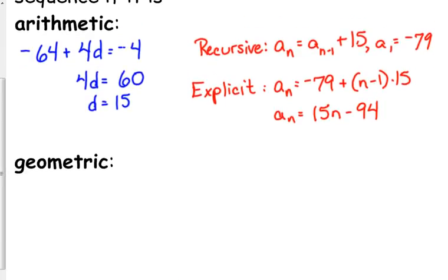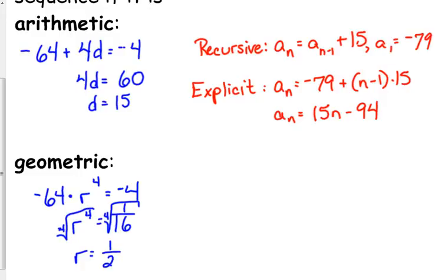Let's do the same thing with the geometric. I start with negative 64, I'm multiplying by the common ratio 4 times, and I end up at negative 4. So negative 64 times r to the fourth equals negative 4. r to the fourth equals 1/16. We take the fourth root of that, and the fourth root is 1 half. The fourth root of 16 is 2, because 2 to the fourth is 16. So the common ratio is 1 half.